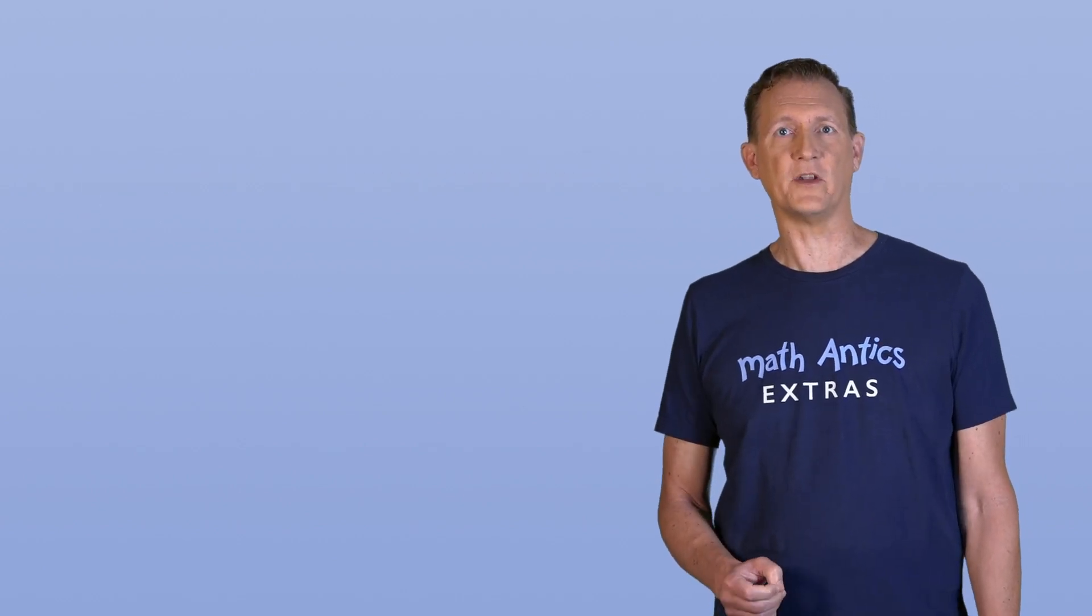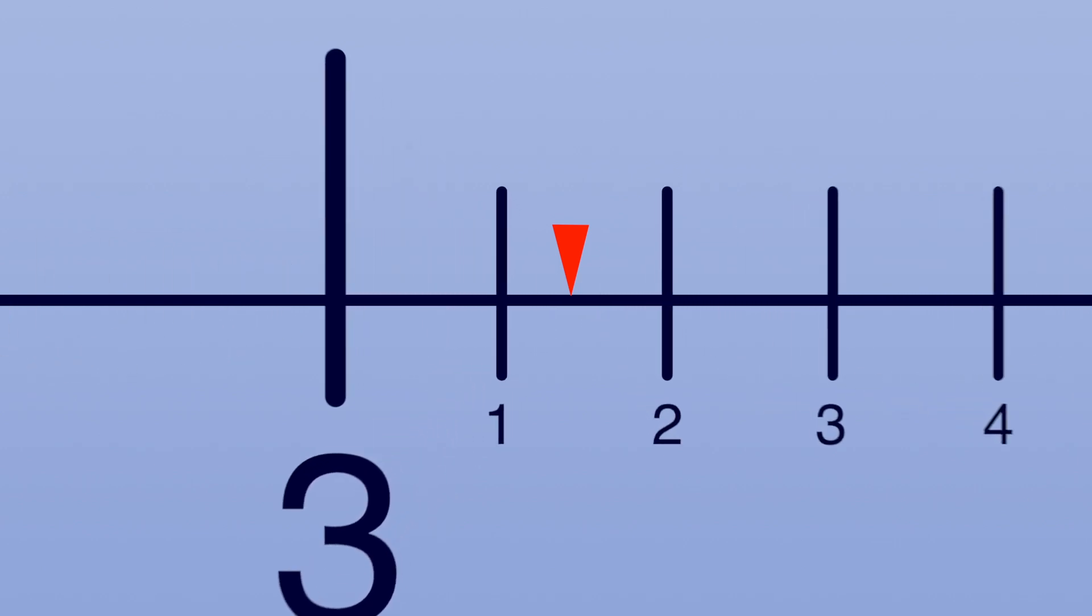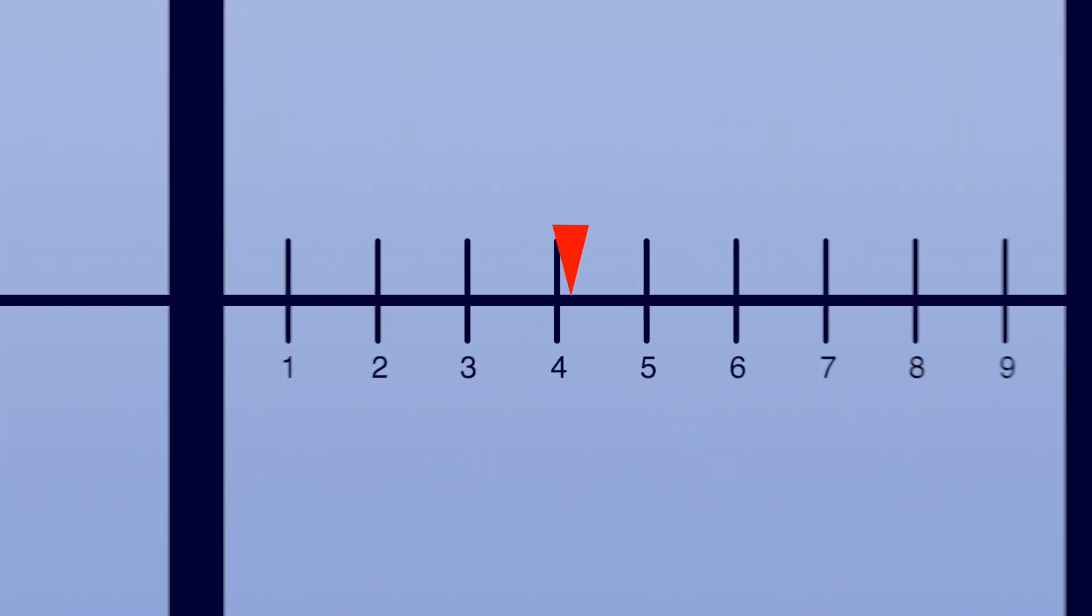So let's look at the value of pi on the number line. It's right about here, between the 3 and the 4. And now let's zoom in. As we zoom in, we keep dividing the spaces into smaller and smaller spaces.